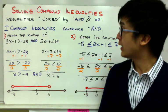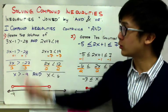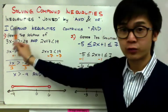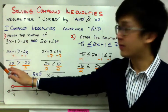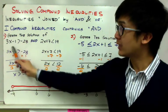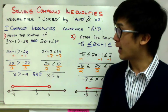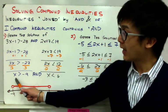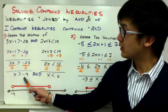To solve compound inequalities containing the AND operation, it's similar to what we did before. We just need to focus on our first set and solve for x. So to solve 3x minus 1 greater than negative 28, we need to add 1 on both sides and divide both sides by 3, leaving us with x greater than negative 9.